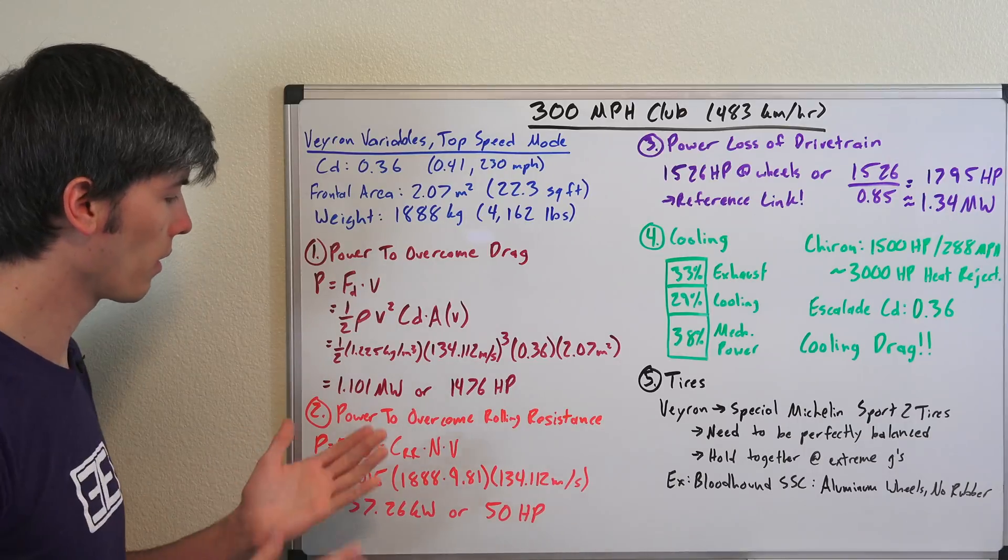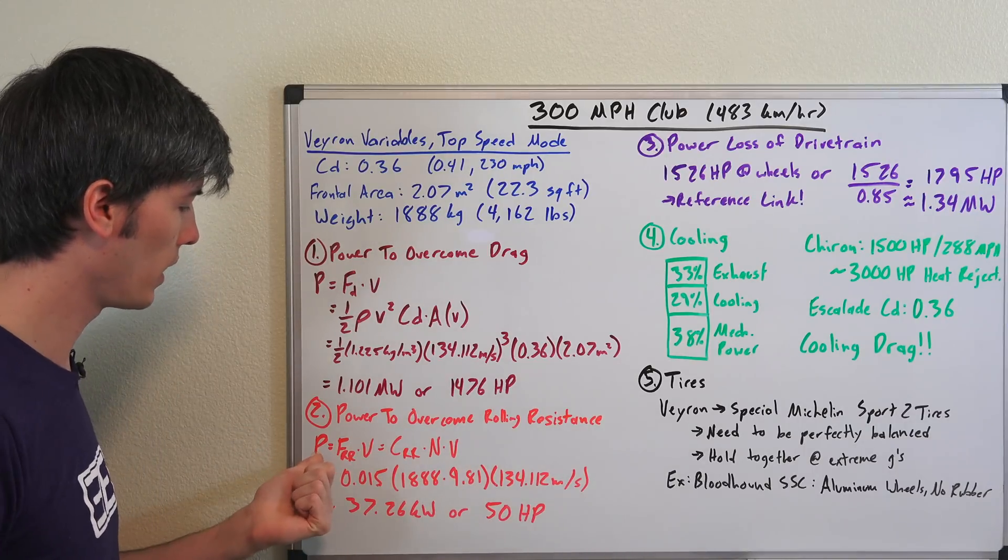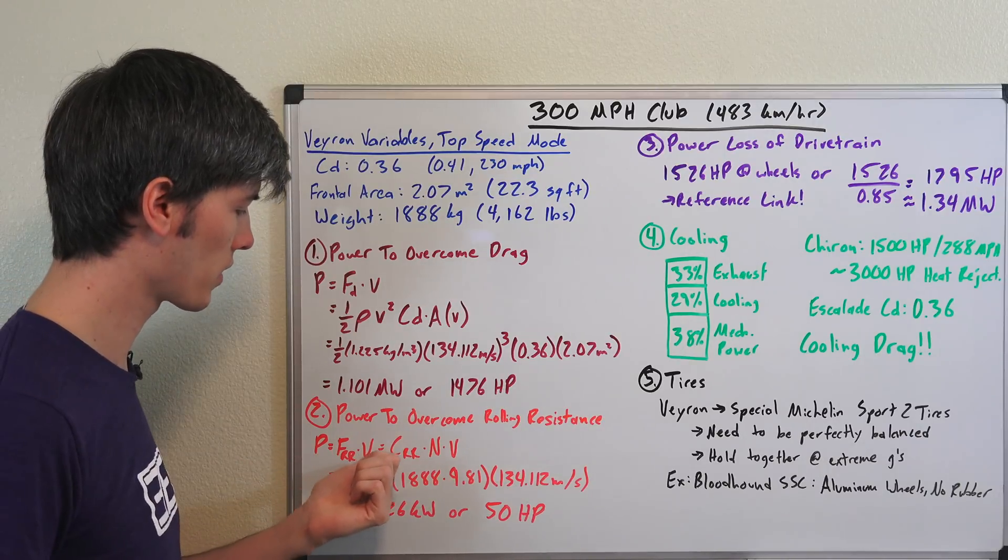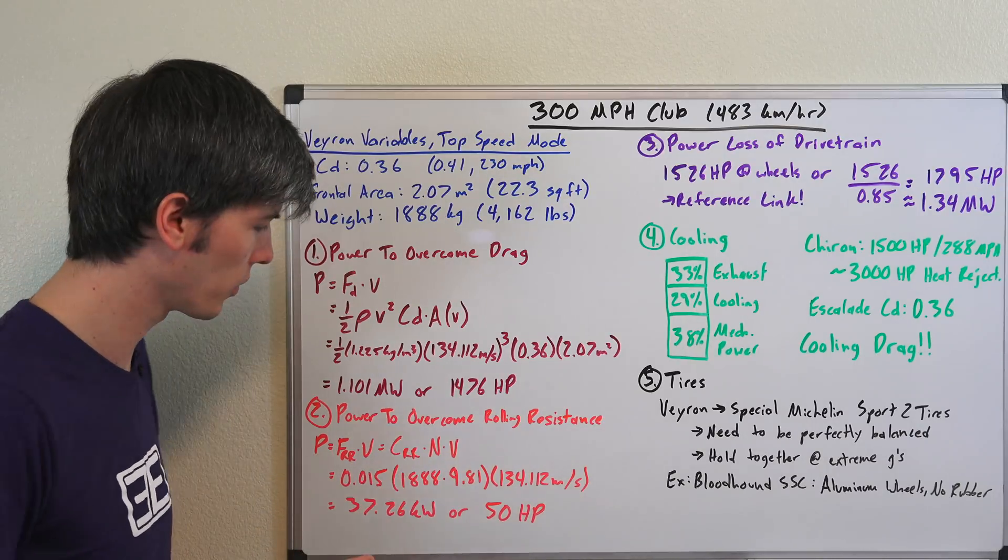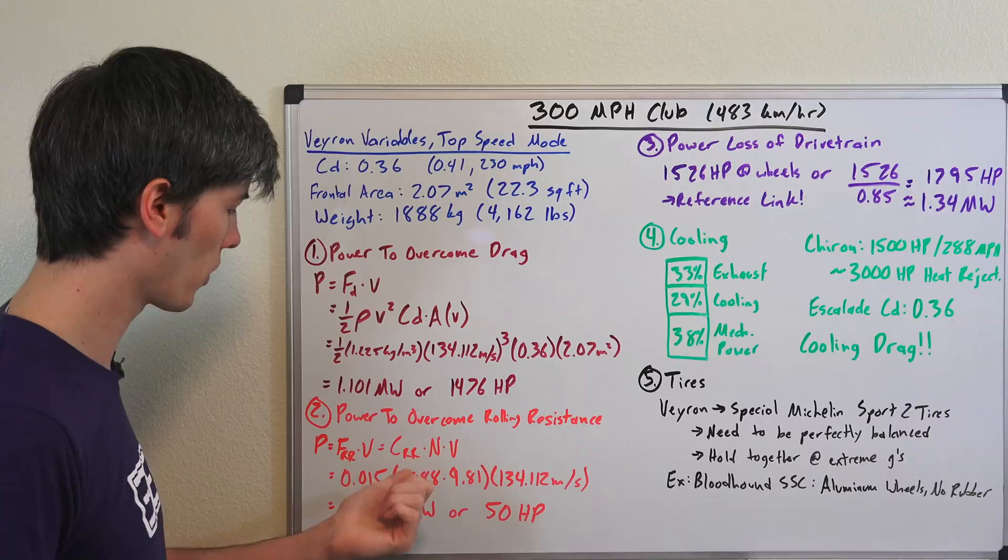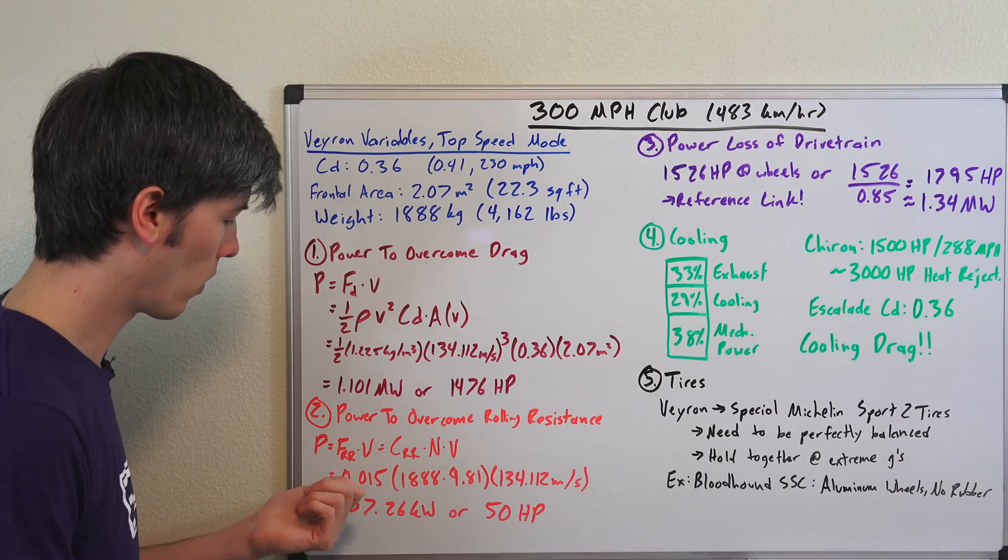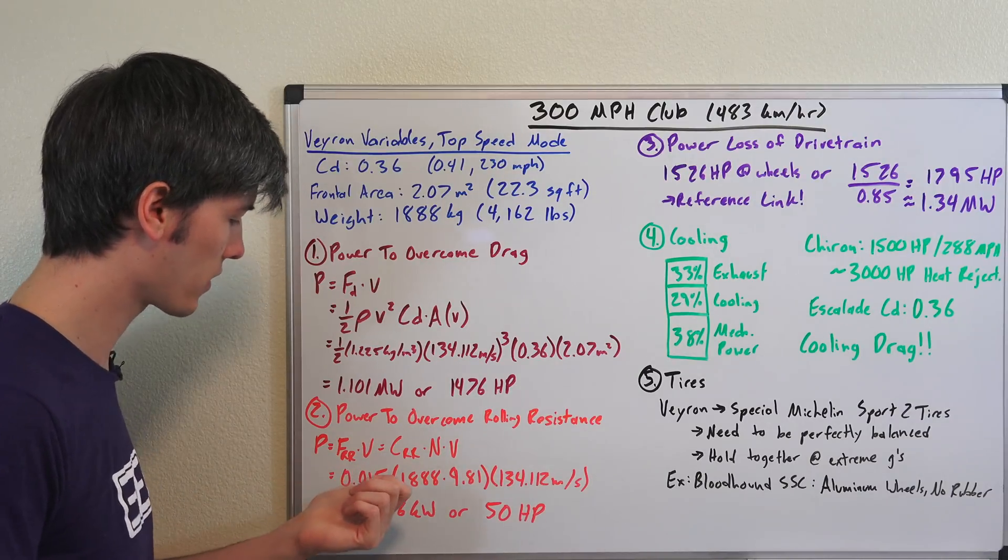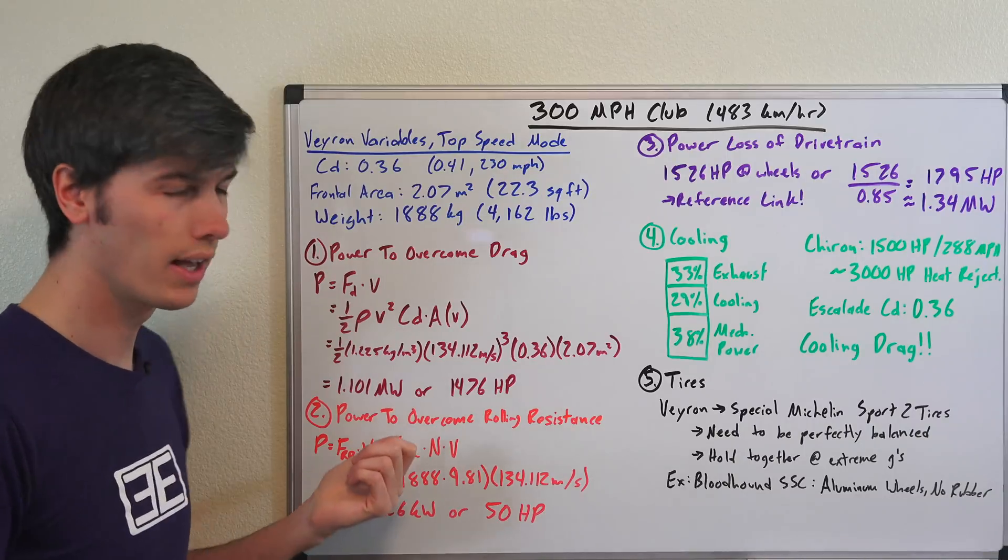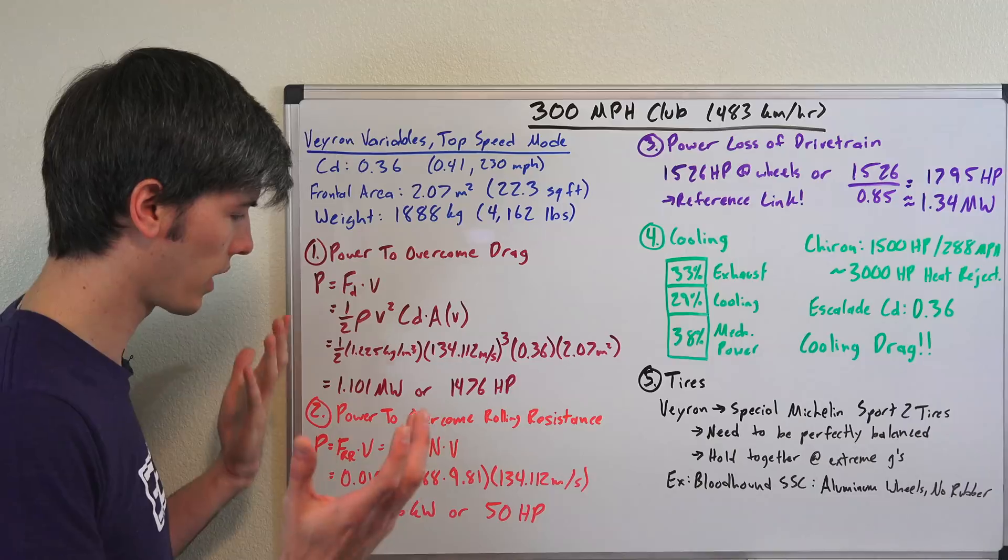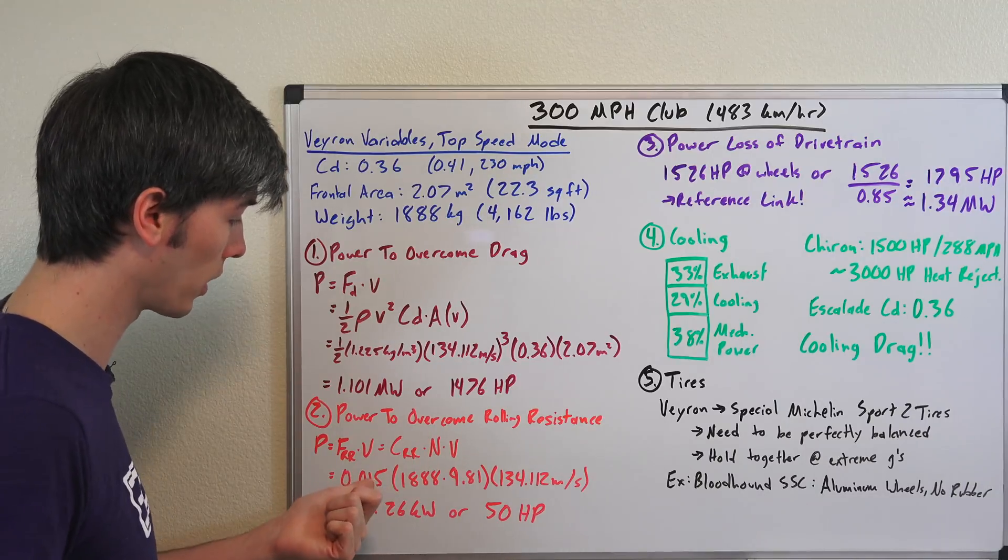Now moving on, power to overcome rolling resistance we need once again force times velocity. So the force of rolling resistance is equal to the coefficient of rolling resistance multiplied by the normal force and then multiplied by our velocity to get power. Now this is using a conservative high estimate of 0.015 as the coefficient of rolling resistance for a tire. I'm just assuming it's a sticky tire that has high rolling resistance.